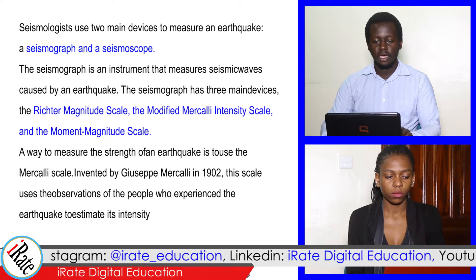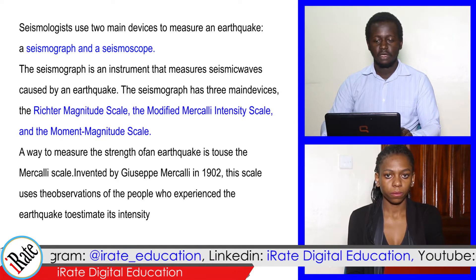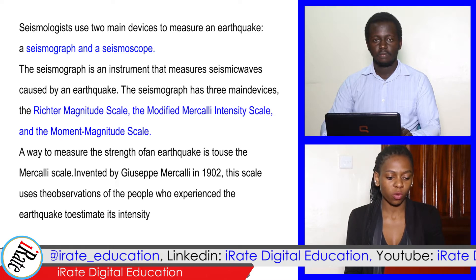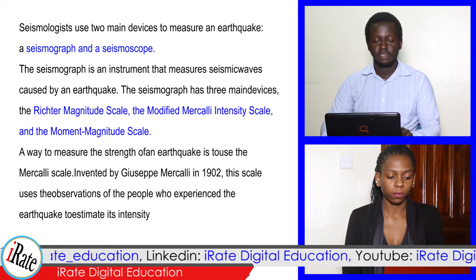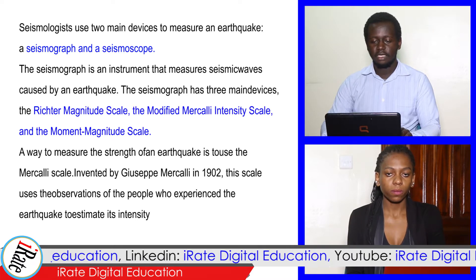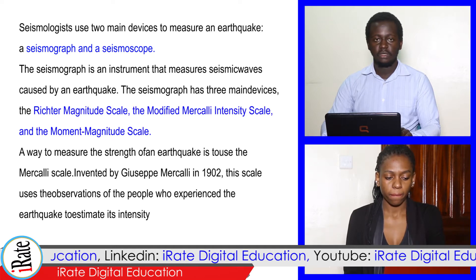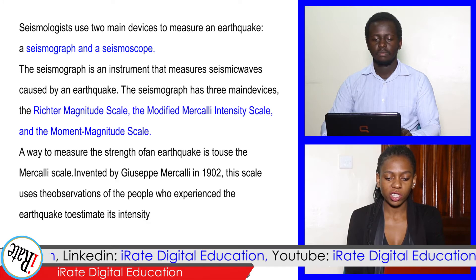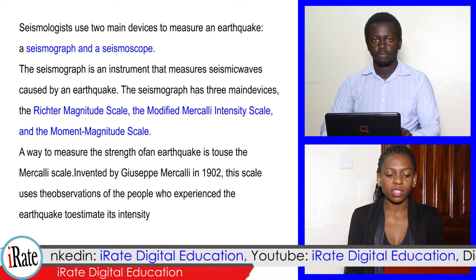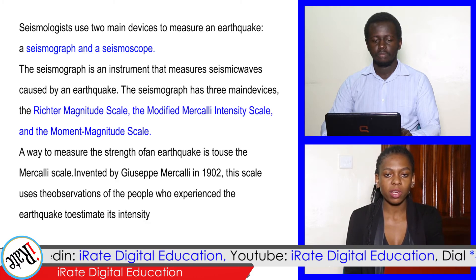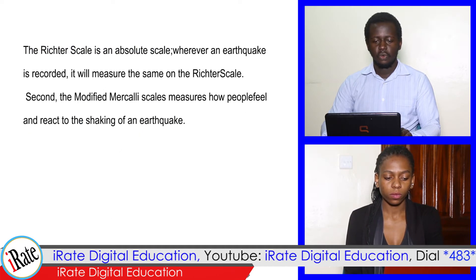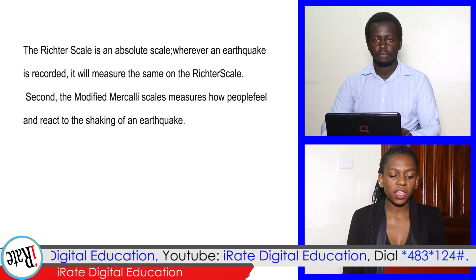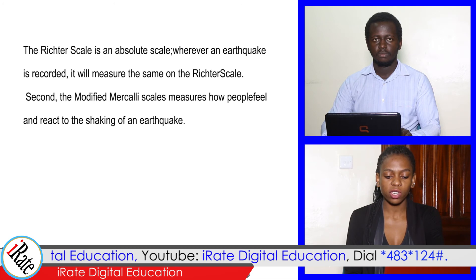Seismologists use two main devices to measure an earthquake. 1. Seismograph and seismoscope. The seismograph is an instrument that measures seismic waves caused by an earthquake. The seismograph has three main devices: the Richter magnitude scale, the modified Mercalli intensity scale, and the moment magnitude scale. A way to measure the strength of an earthquake is to use the Mercalli scale, invented by Giuseppe Mercalli in 1902. This scale uses the observations of people who experience the earthquake to estimate its intensity. The Richter scale is an absolute scale — wherever an earthquake is recorded, it will measure the same on the Richter scale. The modified Mercalli scale measures how people feel and react to the shaking of an earthquake.